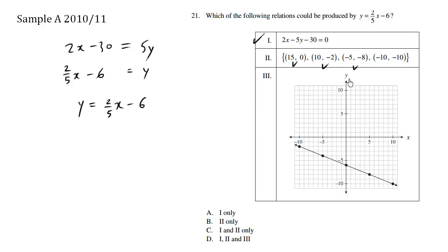Let's try y, which is negative ten. Does it equal two-fifths x, which is negative ten, minus six? We have negative ten divided by five, which is negative two. Negative two times two is negative four. Negative four minus six is negative ten. So this point also works. So we say that this line produces all these points. Check.